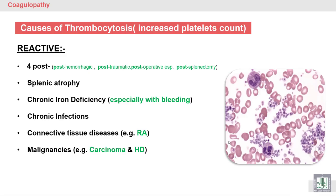Thrombocytosis — another term is thrombocytosis. The suffix '-osis' means increased platelet count. The normal range of platelet count is from 150,000 to 400,000, so more than 400,000 may indicate thrombocytosis.